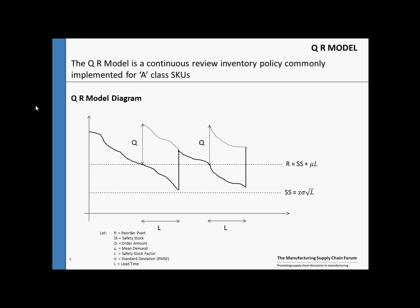Graphically, the Q-R model looks like this. When inventory position hits the reorder point R, an order of Q is triggered. This order Q does not arrive immediately. It takes L periods for the order to arrive. During this time, the inventory decreases down to our dotted line below, which is known as the safety stock level.